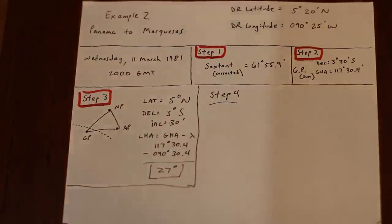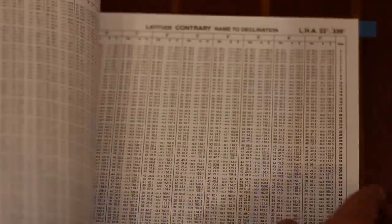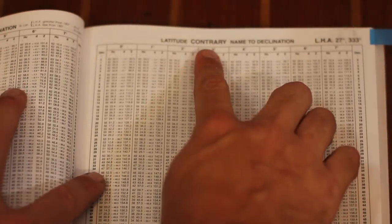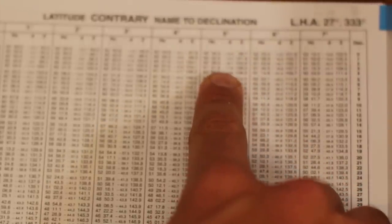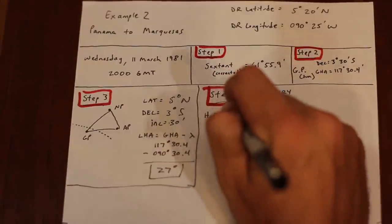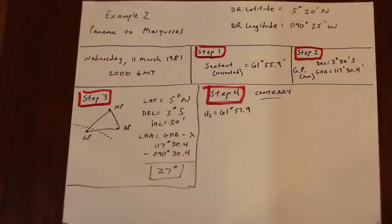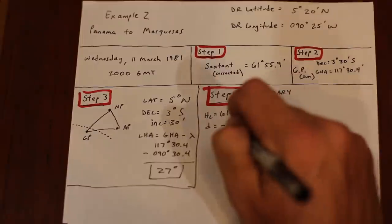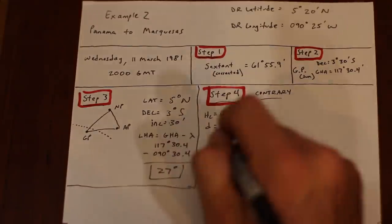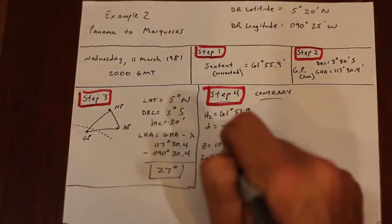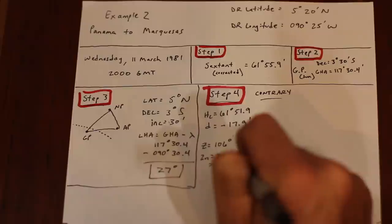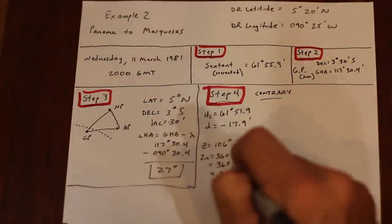Let's go into HO229 and pull out some values. In this case, we're in the northern hemisphere, but the sun is in the southern hemisphere, so we are on the contrary page. No problem, we just have to make sure to use the right page. When we pull out values, we get 61 degrees 51.9 for the computed height, a D number of negative 17.9, which we're going to use in this case, and an azimuth angle of 106 degrees. First things first, let's correct the azimuth figure using the rules located on the pages of HO229. This is the bearing to the sun at the time of observation.